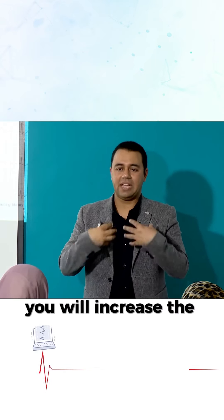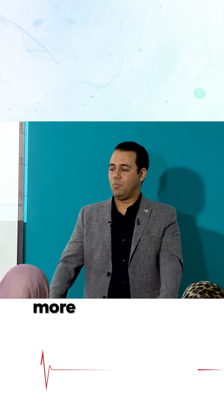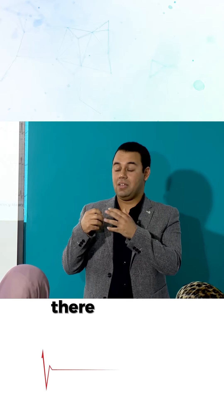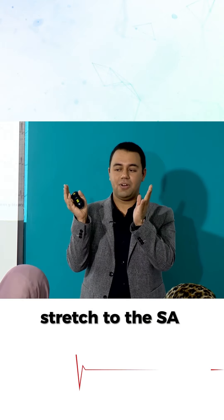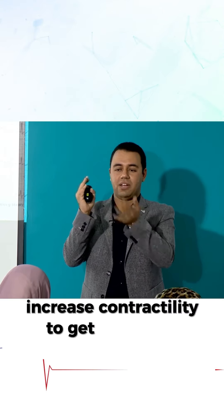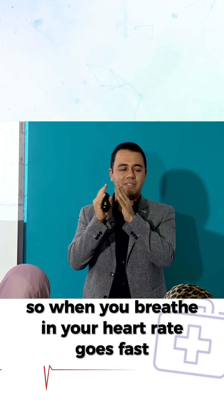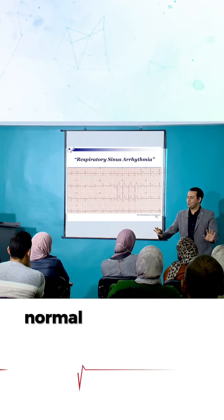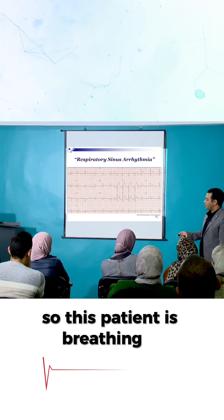Normally, when you breathe in, you increase the negativity in your chest, so venous return increases — more blood goes to the right side of the heart. There will be a stretch to the right atrium, and that stretch increases contractility to get rid of this extra blood. So when you breathe in, your heart rate goes fast; when you breathe out, your heart rate goes low — a normal physiological phenomenon.